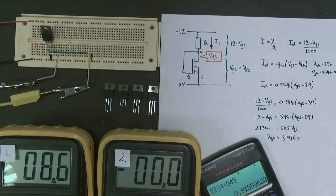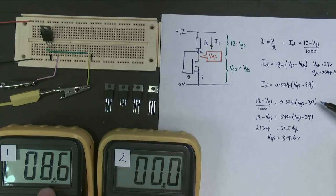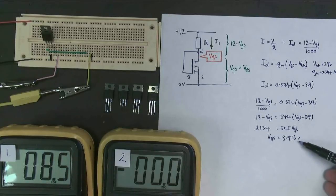Now does that make sense? Well yes it does, because our threshold voltage is 3.9. We've only got 8 milliamps of current flowing, so we're hardly conducting. So our gate source voltage being just above the threshold voltage does make sense.